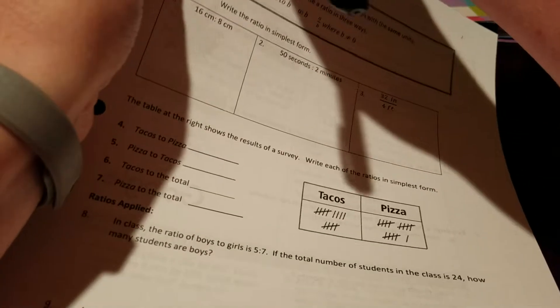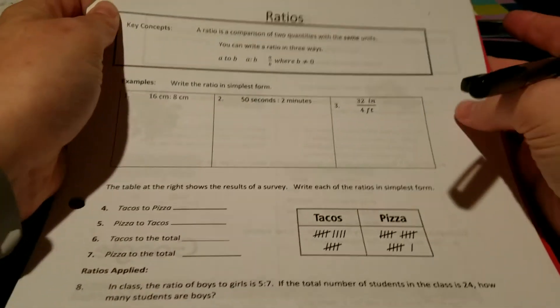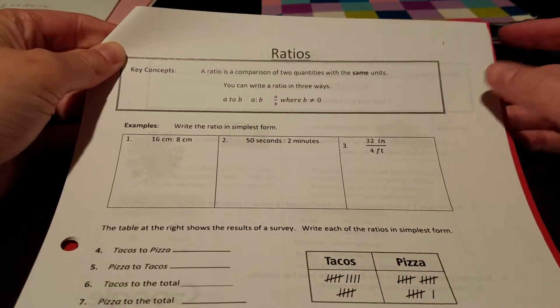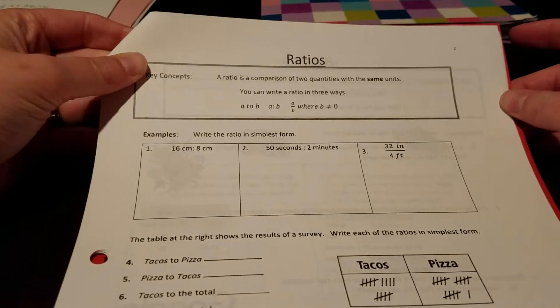New chapter here. We're talking about rates, ratios, and proportions in this chapter. This first lesson is on ratios, and just so you know, a ratio is a comparison of two quantities with the same units. So they have to have units that are actually going to cancel each other out.